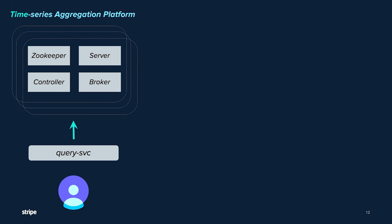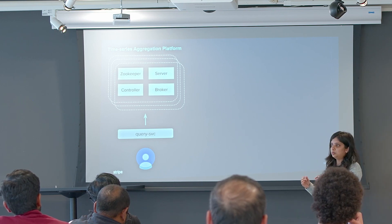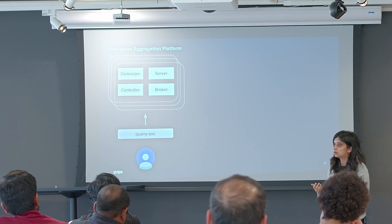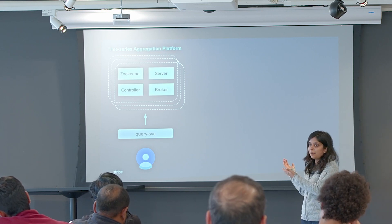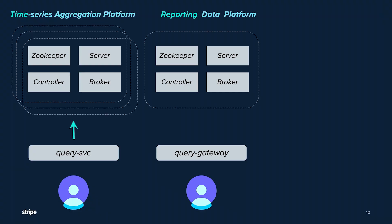The next question is which of those eight production clusters we put your table on. We offer a few flavors of Pinot. One is the time series platform — not just a single Pinot cluster but multiple clusters differentiated by production tiering: tier 0, tier 1, tier 2. For users who are satisfied with the query APIs and can represent their use case as a time series with low latency and high freshness requirements, they're happy with this platform. For users who want native dashboard integrations, we have them use the reporting data platform, which is a single Pinot cluster.